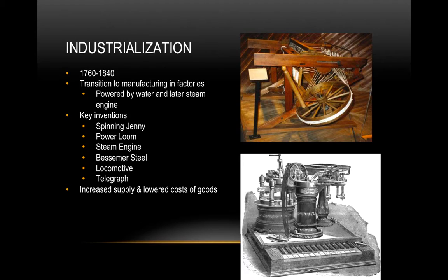The Bessemer steel process allows steel to be used to lay down railroad tracks and create rail cars that transport goods much faster than mules, horses, or oxen, while also allowing for faster travel for people. The telegraph is also a major invention, allowing for almost instant communication — you need to know Morse code, but you can send news around the country or the world quickly. All of this increases the supply of goods and lowers costs.